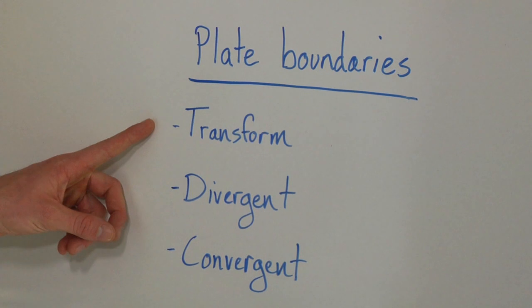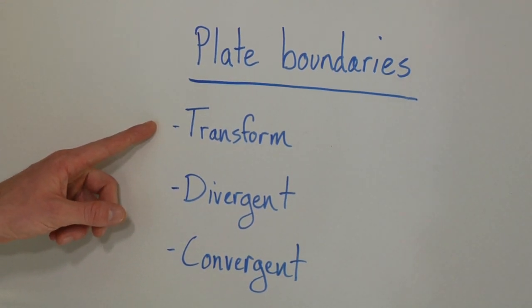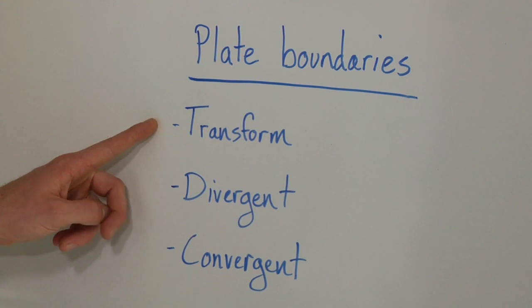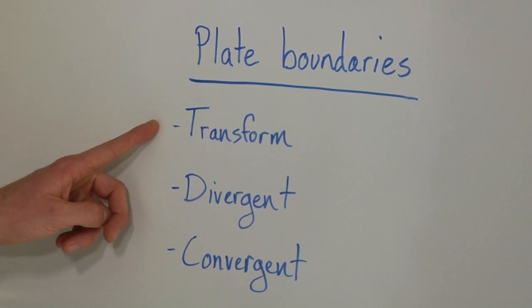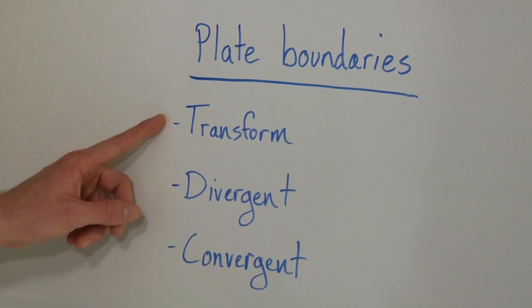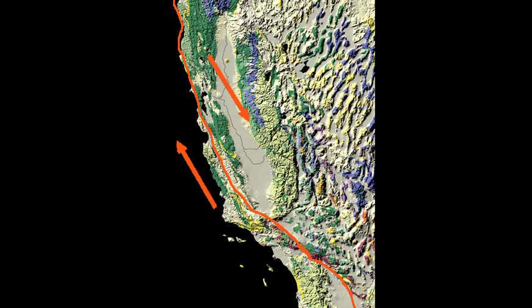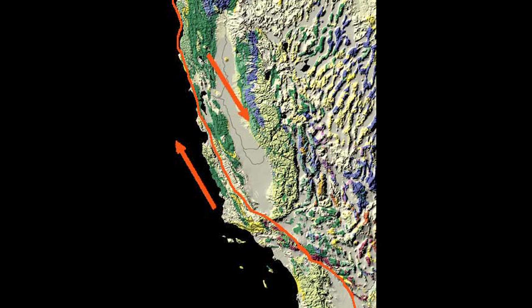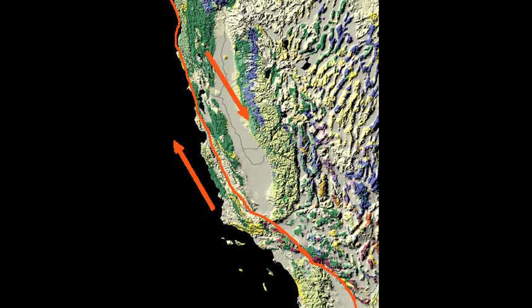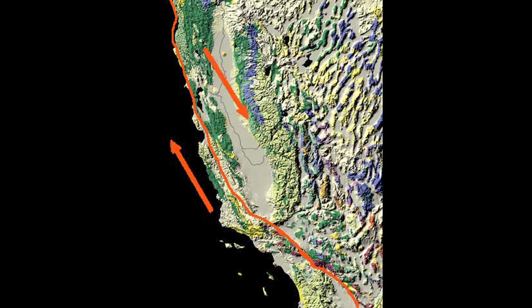First you have transform boundaries. Transform boundaries are those where two plates end up sliding past each other — not really so much sliding as it is grinding. You have one moving one direction and one moving the other direction. Think of the San Andreas fault: one side moves up and the other moves down and they just grind past each other.